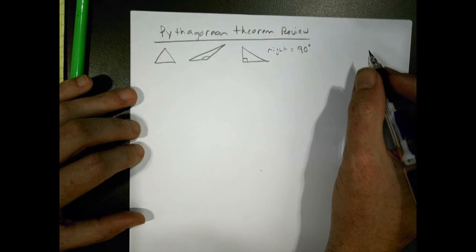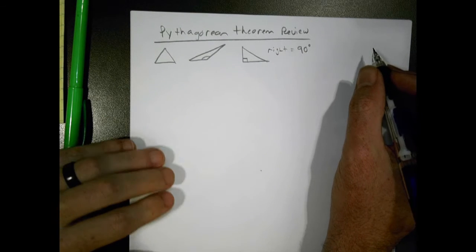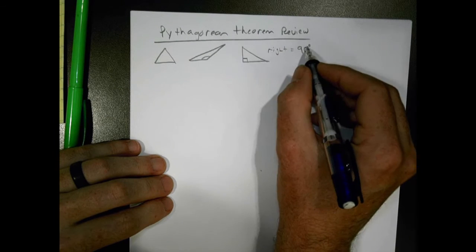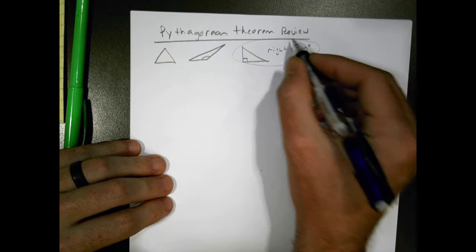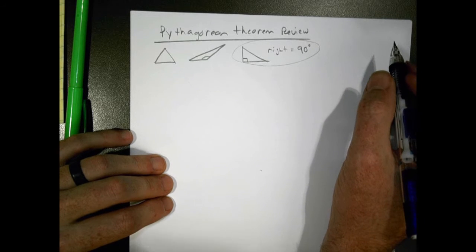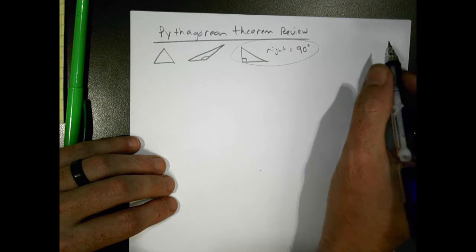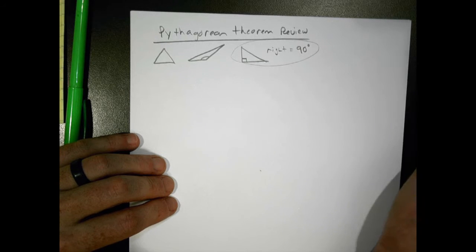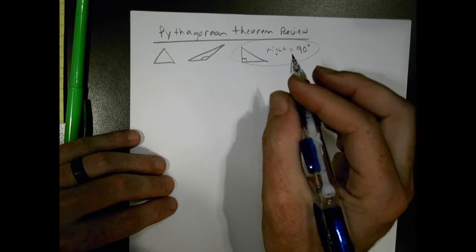In order for the Pythagorean Theorem to work or be used, we have to be talking about a right triangle. If we try with other types of triangles, it's just not going to work out. We don't have time to go into that today, but maybe another time we could talk about that.